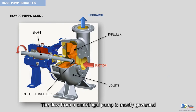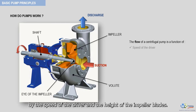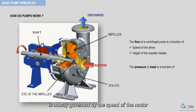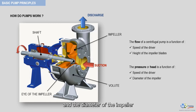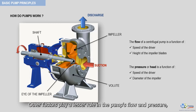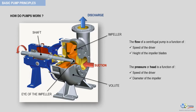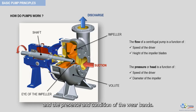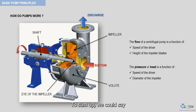The flow from a centrifugal pump is mostly governed by the speed of the driver and the height of the impeller blades. The pressure or head that these types of pumps can generate is mostly governed by the speed of the motor and the diameter of the impeller. Other factors play a lesser role in the pump's flow and pressure, such as the number, pitch, and thickness of the impeller blades, as well as the internal clearances and the presence and condition of the wear bands. These factors will be covered in detail further ahead.